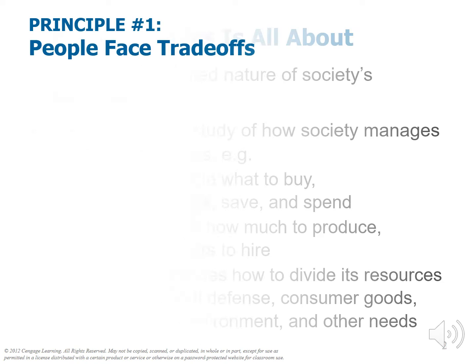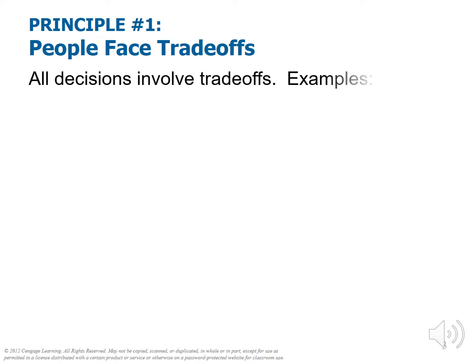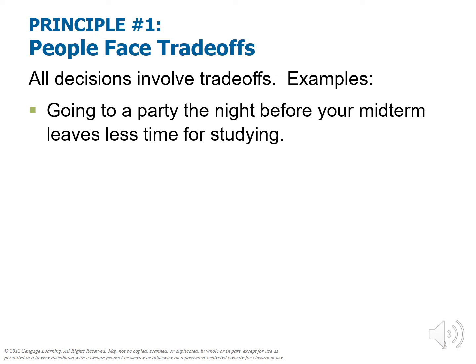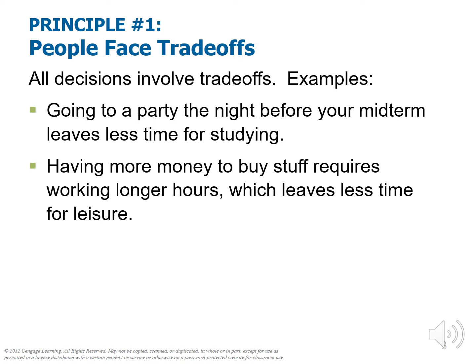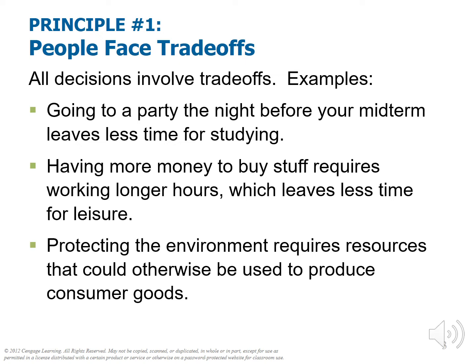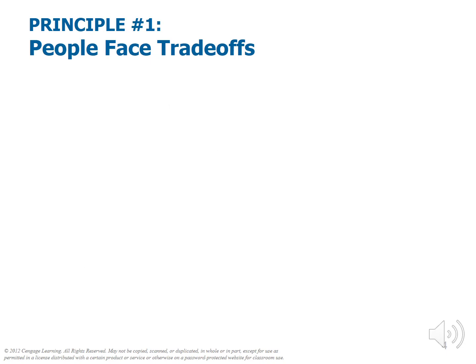All decisions involve trade-offs. For example, if you go out and party before your midterm, you won't be studying. If you go take a nap, you won't be at the gym. If you're in this class, you won't be at work. Having more money to buy stuff requires working longer hours and less time for leisure. Protecting the environment requires other resources be moved away from producing consumer goods. There are trade-offs in everything.